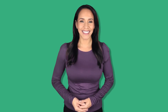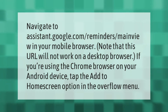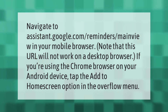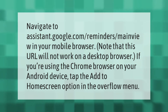Navigate to assistant.google.com/reminders/main view in your mobile browser. Note that this URL will not work on a desktop browser. If you're using the Chrome browser on your Android device, tap the Add to Home Screen option in the overflow menu.